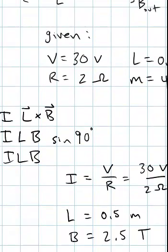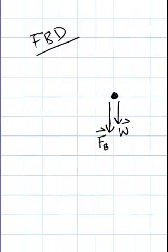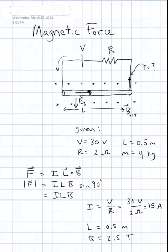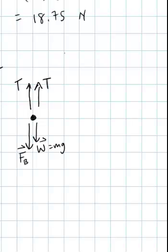So I'm going to go ahead and draw a free body diagram. Here's my rod. I've got a magnetic force down towards the bottom of the page. I also have the weight of the rod pulling down towards the bottom of the page. And I've got the two wires. The tension in the wires pulling up on each side of the rod.